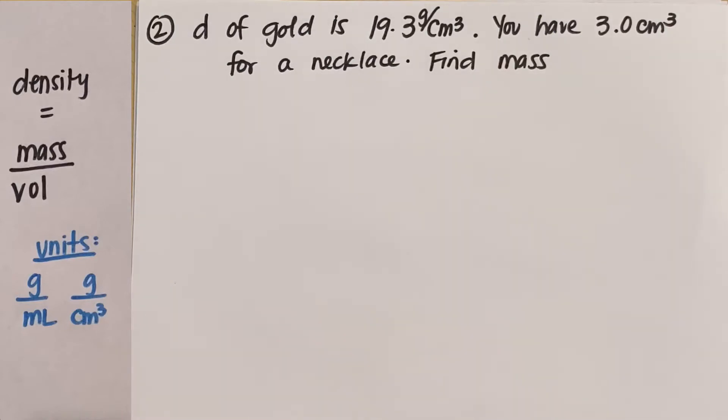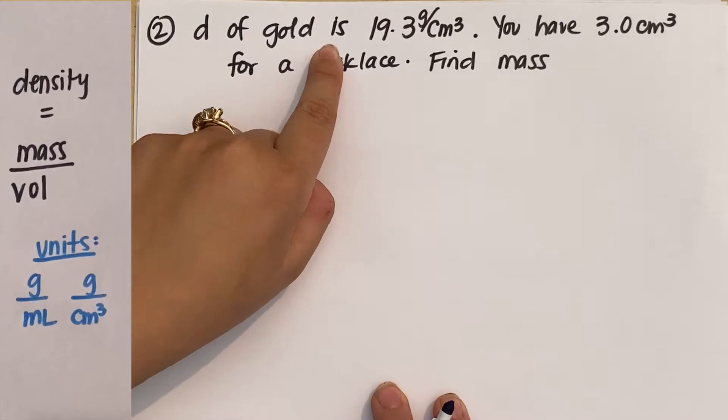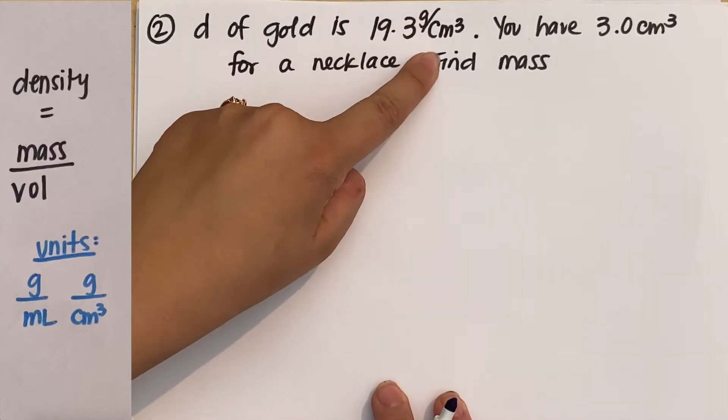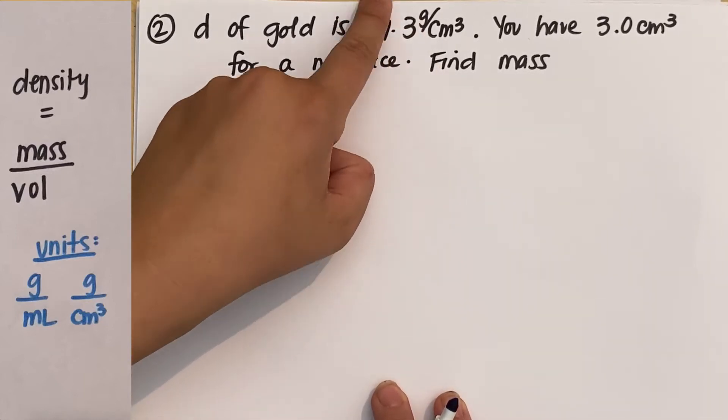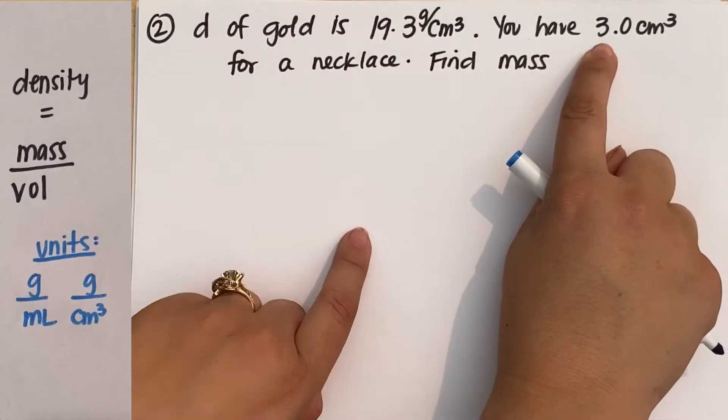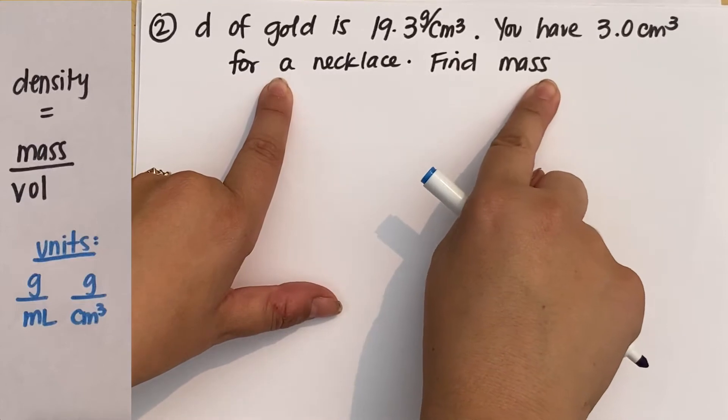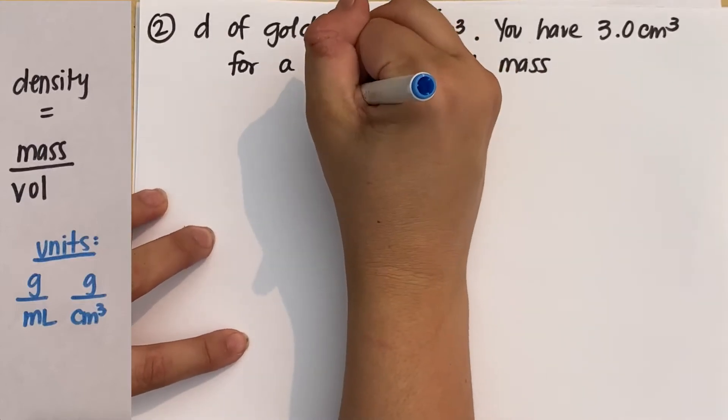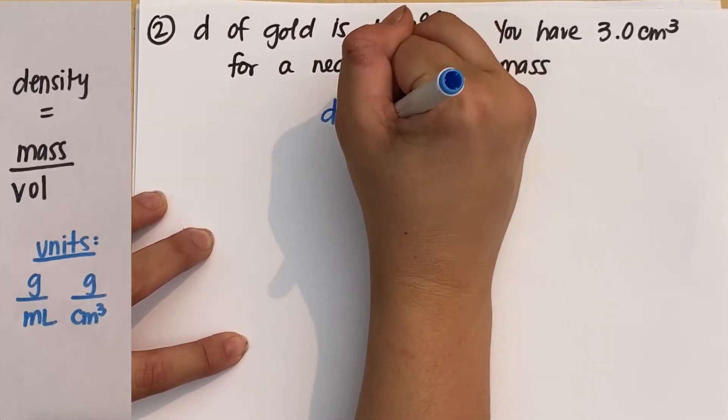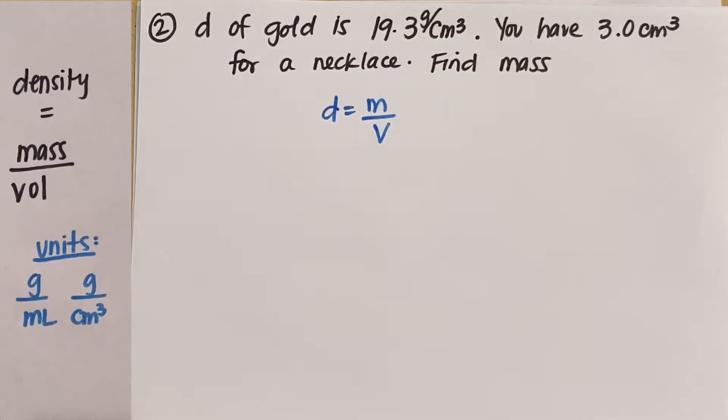Question two is going to be our medium level question. The density of gold is 19.3 grams per centimeter cubed. You have 3.0 centimeters cubed of gold for a necklace. Find the mass. First step is just set up: Density is mass divided by volume. And now plug in what you have.